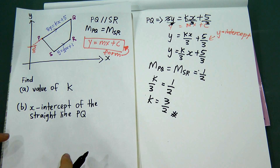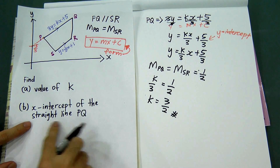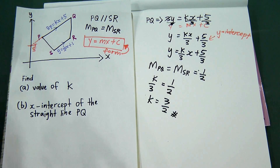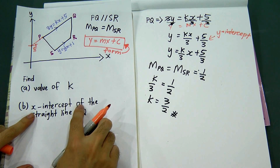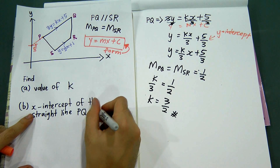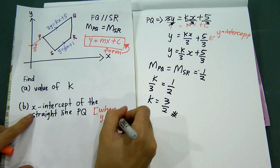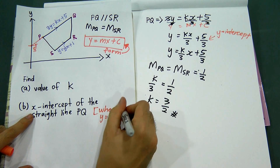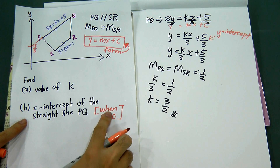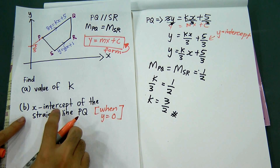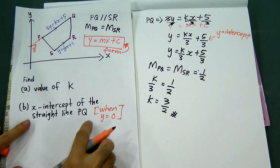For part (b), it is very simple. It asks you to find the x-intercept of straight line PQ. As mentioned in the last video, when finding the x-intercept, you need to know that the x-intercept occurs when y = 0.